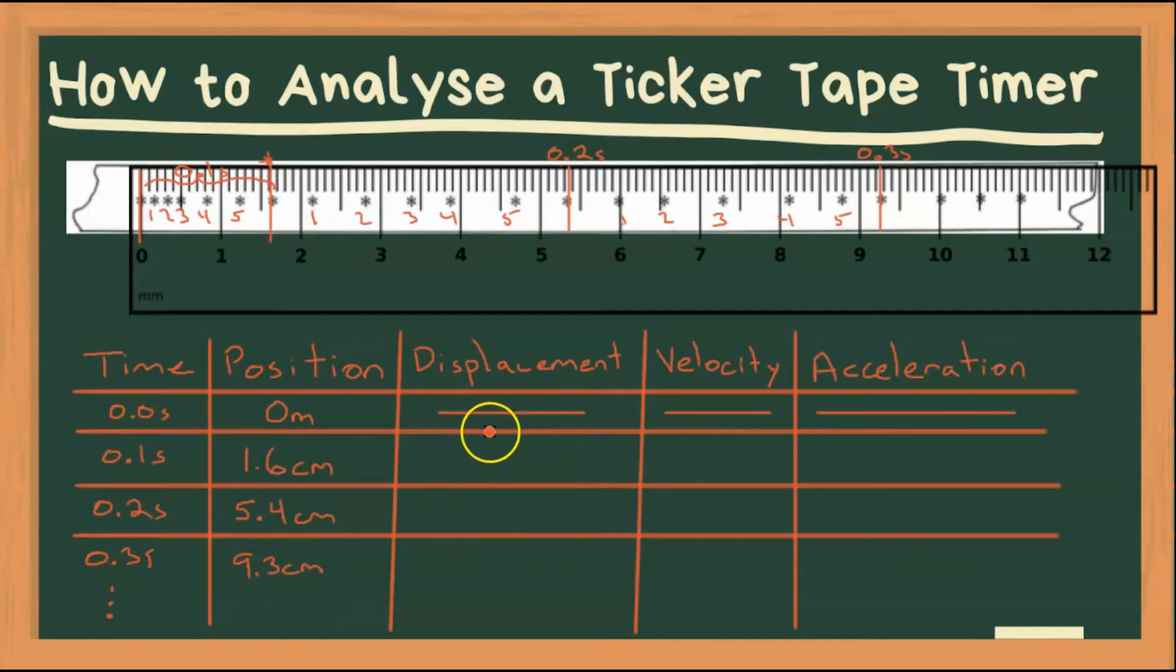Now our displacement is change in position, so it's going to be our final minus our initial, or in this case 1.6 centimeters. We can continue for the next one, which would be 5.4 centimeters minus the previous position, which was 1.6 centimeters, and we get a new displacement of 3.8 centimeters. And again for the last one: 9.3 centimeters minus 5.4 centimeters, which is 3.9 centimeters.